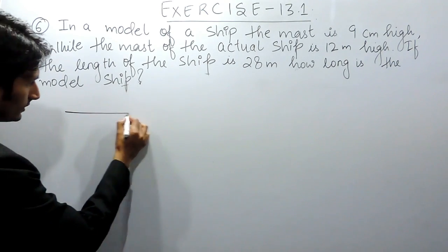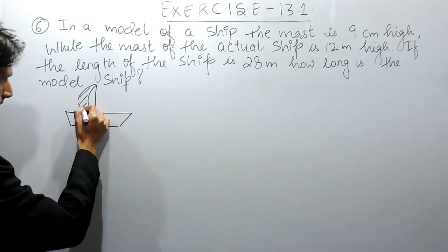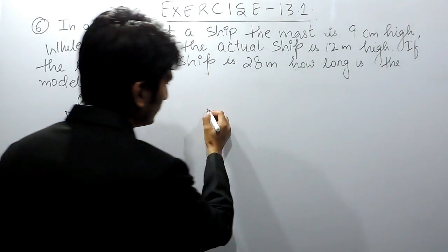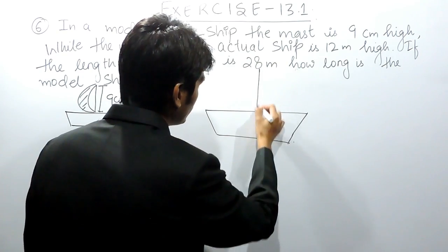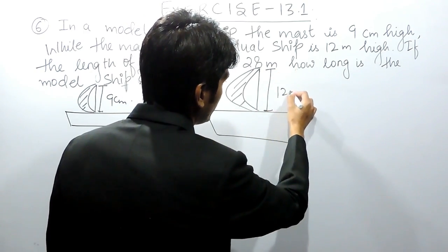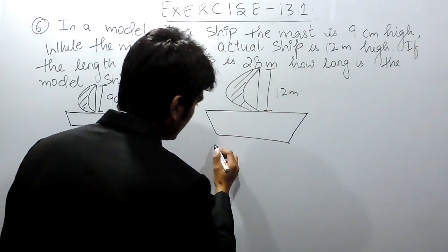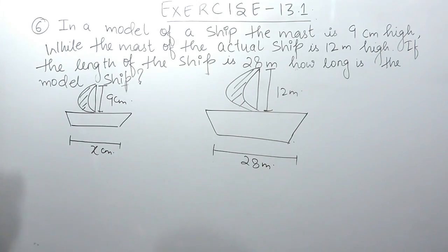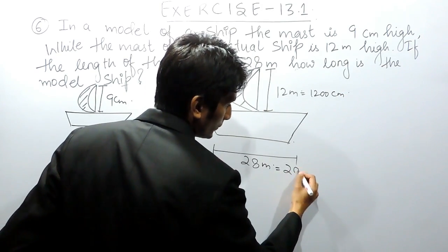In this question, this is the model ship and the length of its mast is 9 centimeters. There is an actual ship and its mast is 12 meters high. You have to find the length of this model if the length of this actual ship is 28 meters. So 12 meters can be written as 1200 centimeters and 28 meters can be written as 2800 centimeters, so that all units are the same.